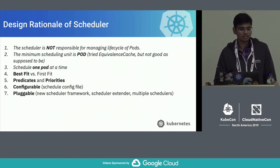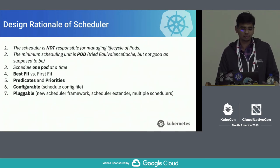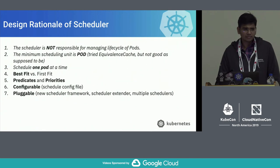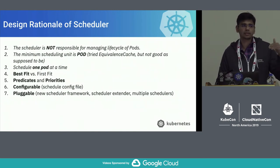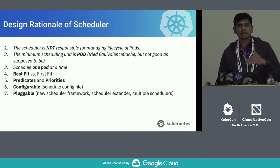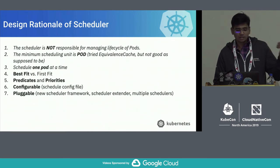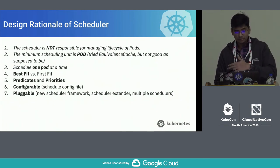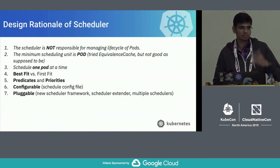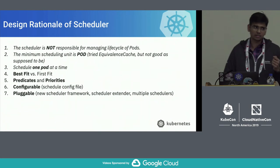Another important aspect is making the scheduler pluggable. Previously, we had the scheduler extender, which runs at various stages like predicates, priorities, or after binding. We've taken it to the next level by breaking the scheduling cycle into multiple stages — pre-filter, post-filter, filter, and ranking — with extension points at every phase. This is what we mean by eating our own dog food, converting existing predicates and priorities to this new scheduling framework. Abdullah will discuss that in the deep dive tomorrow.